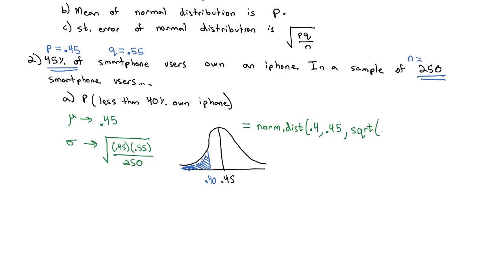And we type 0.45 times 0.55, then the slash for divide, 250. Close the parenthesis on the square root, and we say comma, true. Excel then will give us the area to the left on this normal distribution is equal to 0.0533.